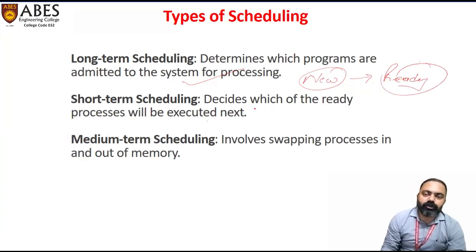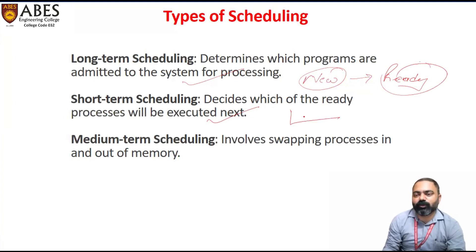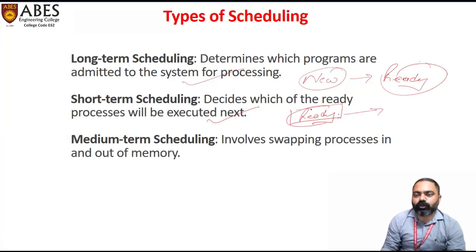Short-term scheduling is done by the short-term scheduler, which decides which of the ready processes will be executed next. There are a number of processes in the ready queue, and the short-term scheduler decides which process among those in the ready queue is selected and transferred to the CPU for execution.